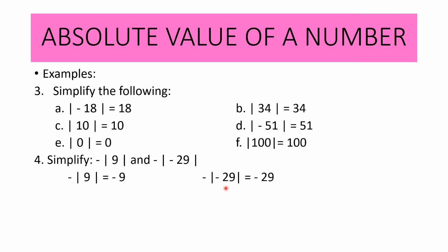For the second example, we have negative absolute value of negative 29. First, get the absolute value of negative 29, which is 29. Then get the opposite of 29, so we have negative 29.